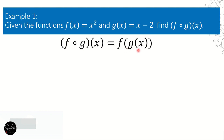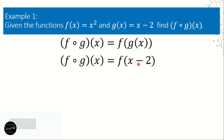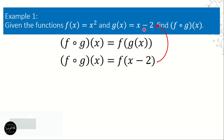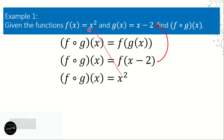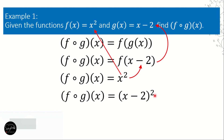First, we remove g of x and replace it with its value. The value of g of x is x minus 2, because it is the inner function. Then we look at f of x, which is x squared. We remove x and replace it with x minus 2, while the exponent 2 stays. So that gives us x minus 2, quantity raised to the second power.